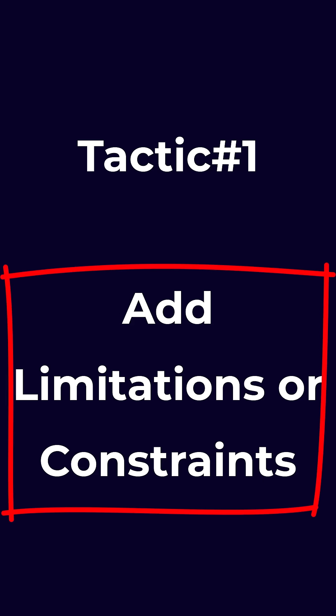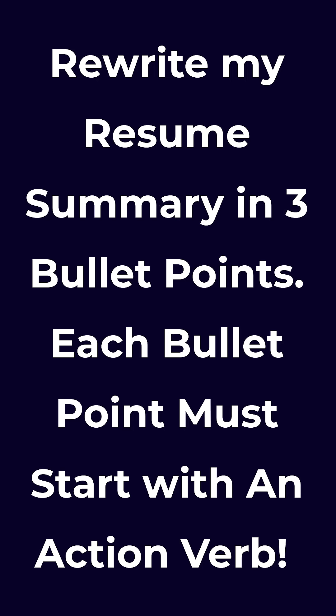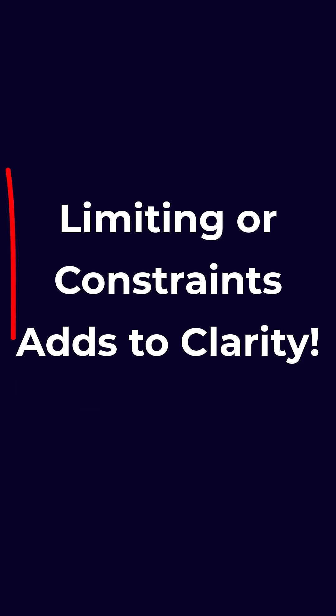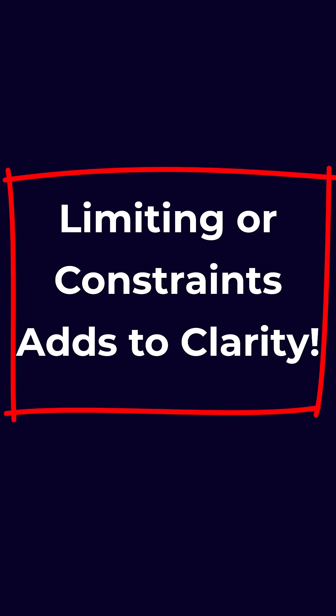Tactic 1: Add constraints. Tell this to ChatGPT — rewrite my resume summary in three bullet points, and each bullet point must start with an action verb. Why? Because limiting adds to clarity.